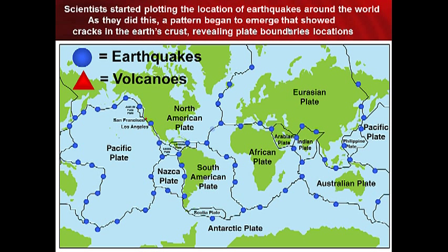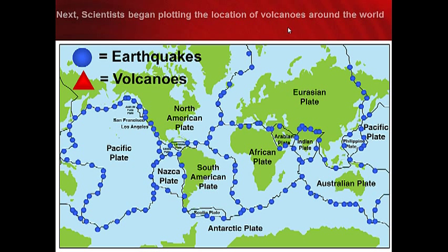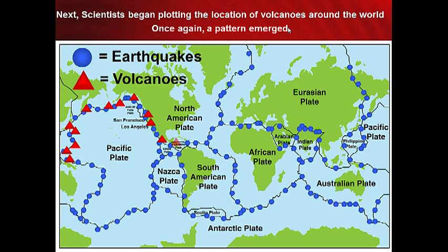Scientists plotted earthquakes all over the world and realized that earthquakes happen in certain locations, not randomly — they occur where these two plates meet. Next, scientists began plotting the location of volcanoes around the world. Once again, a pattern emerged, and they realized that many of the world's volcanoes happen in the same regions as earthquakes. Volcanoes happen at plate boundaries, where plates meet.